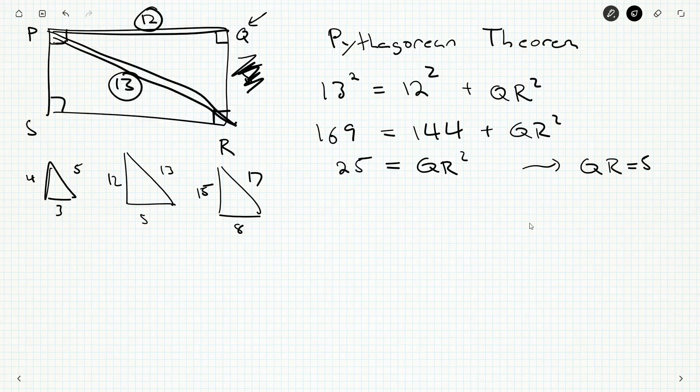So the missing side, the width that we need is 5. So finally, the area of our rectangle is going to be length times width. We get a final answer of 60.